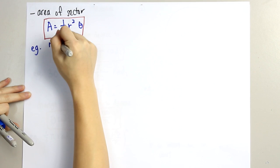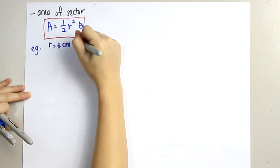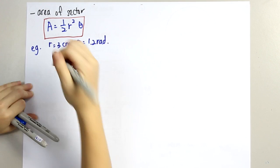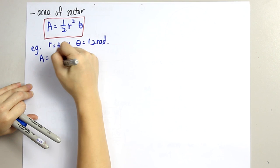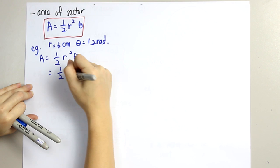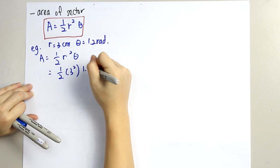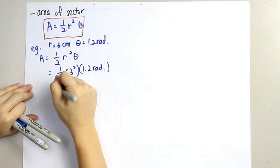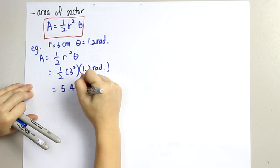Let's try an example. Let's say r is 3 cm and theta is 1.2 radian. Using the formula, 1 over 2 times r squared times theta gives us 1 over 2 times 3 squared times 1.2 radian. We will get the answer 5.4 cm squared.